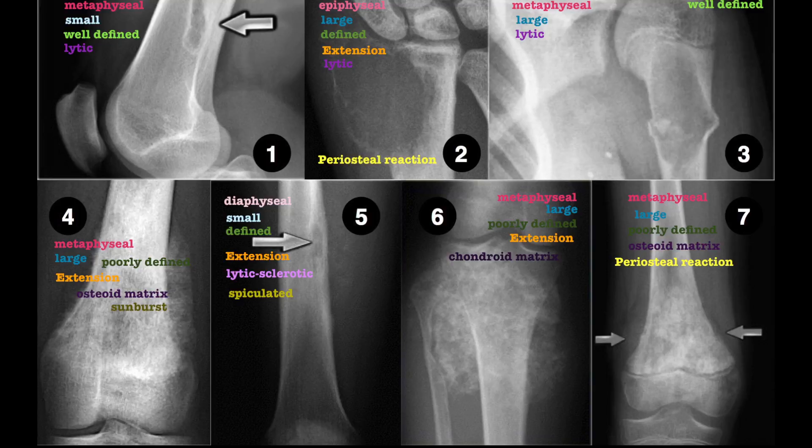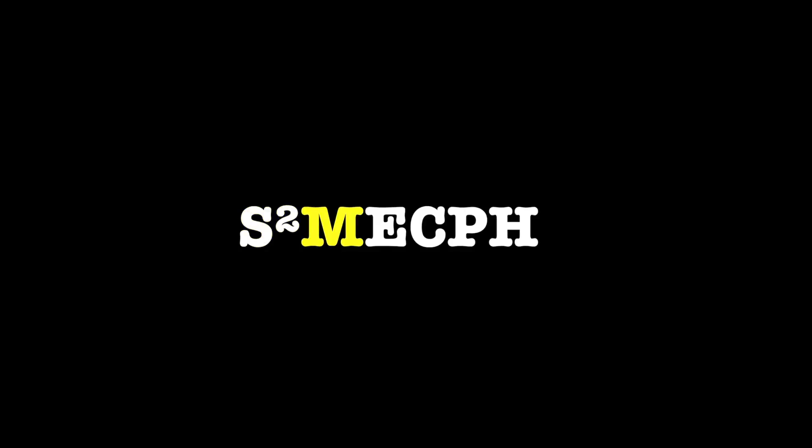In summary, we have applied the SMEC-PH approach to various tumours and looked at the radiological features that suggest a malignant or benign process. Remember SMEC-PH: Site, Size, Margin, Extent, Content, Periosteum and Healing. We'll see you next time.